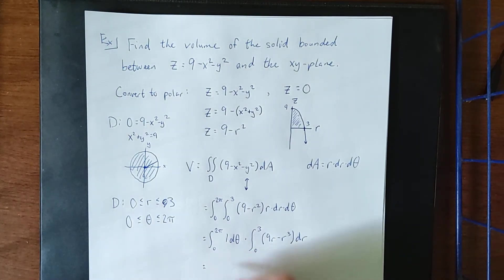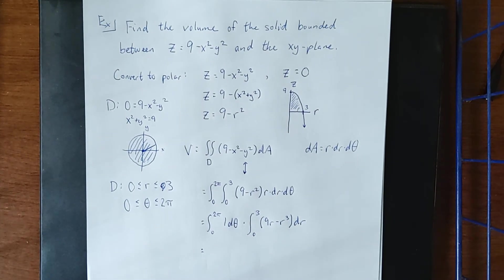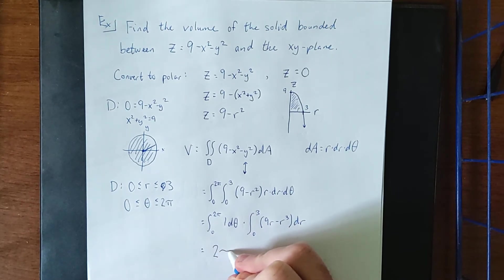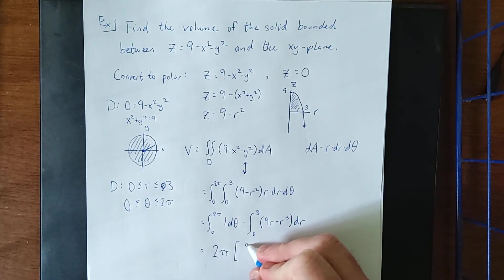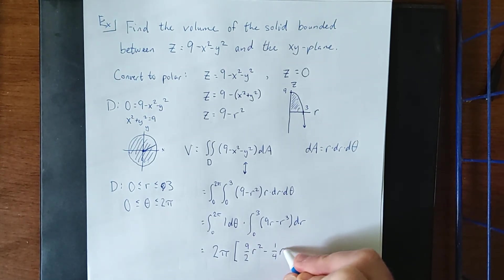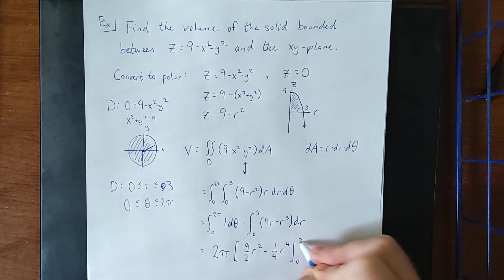Our first integral, the integral of 1, is simply going to be 1 times the length of the interval, so that'll be 2 pi times. Integrating term by term, we will see 9 halves r squared minus 1 quarter r to the 4th. This will be going from 0 to 3.